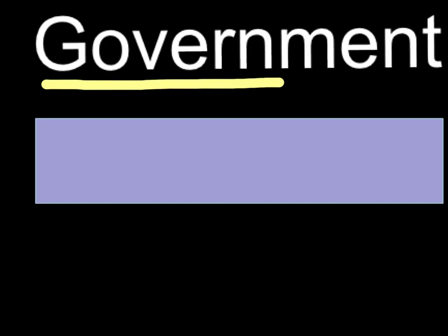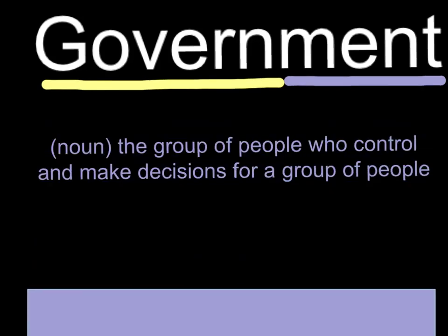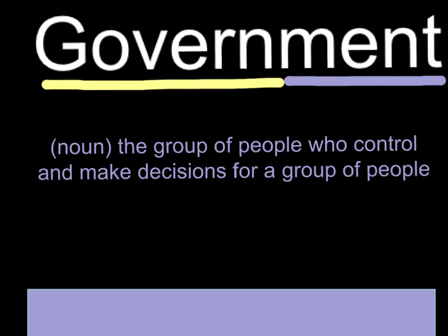That is a verb. And then when we add on the suffix '-ment,' that turns it into a noun. And that noun means the group of people who control and make decisions for a group of people. Whether we're talking about a country or a city or a state, the government is the organization or group of people who are making the official decisions about what's going to go on in that place.